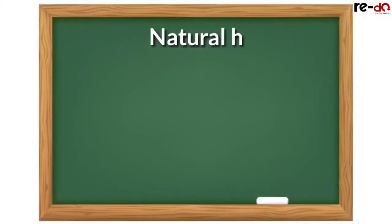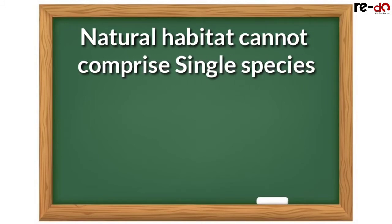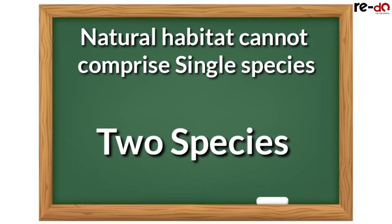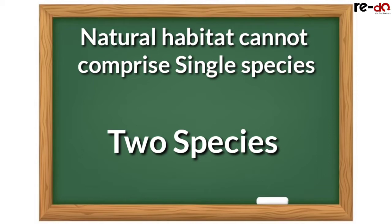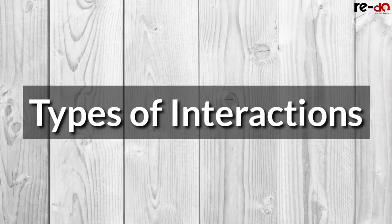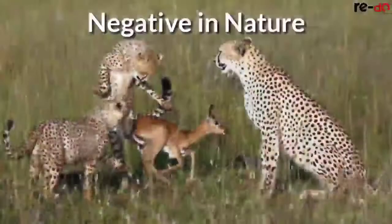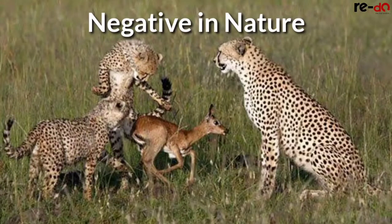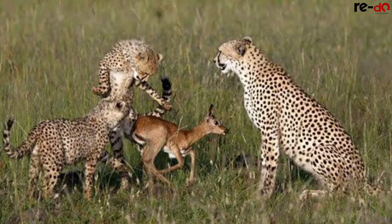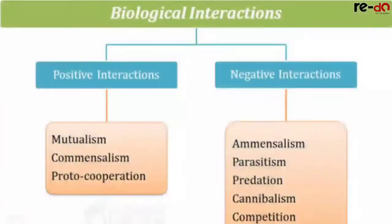You have to realize that any natural habitat cannot comprise of a single species. It has to have at least a minimum of two species where one species is feeding on the other species for survival. So the interactions between these populations may be inter-specific interactions. We are going to be dealing with the types of inter-specific interactions today. Interactions may be of two types: they may be positive in nature where both the parties are benefiting from each other, or they may be negative where one party benefits and the other party is harmed. So we are going to look at both these types of interactions today. I will first be dealing with the negative interactions and then we will move on to the positive interactions.